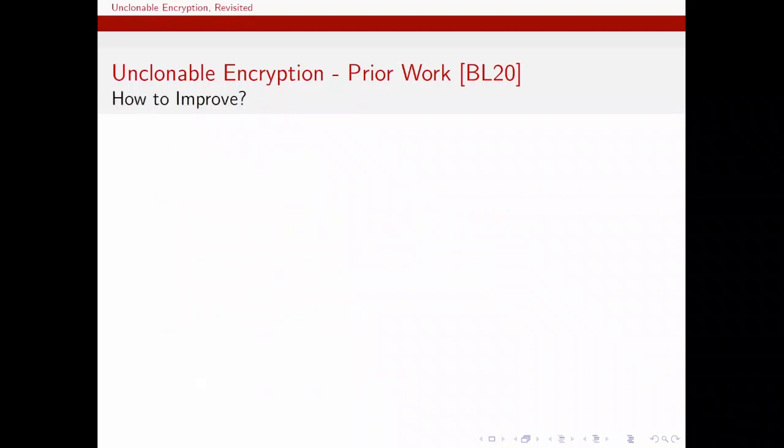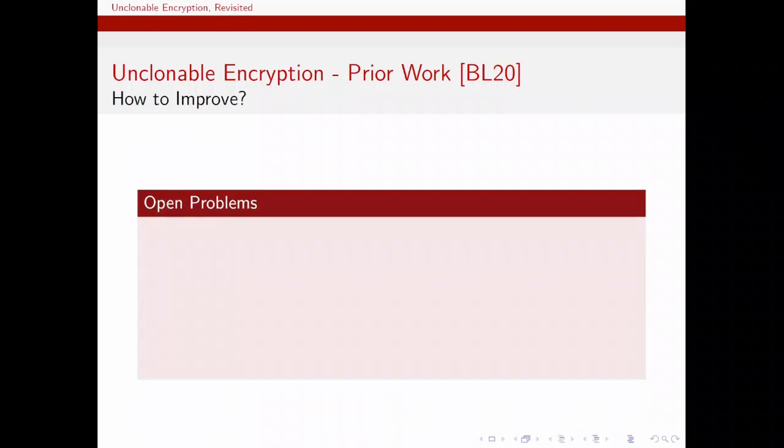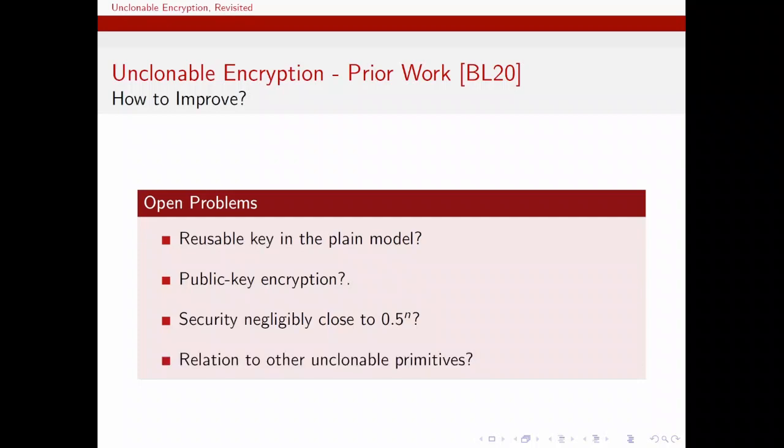In this work, we explore different ways to improve on this introductory work on unclonable encryption. Here are some of the open directions left by the authors to explore. Can we make the key reusable without resorting to the random oracle model? Can we make the encryption in the public key setting? Can we achieve security close to 0.5 to the n, which matches the trivial attack? And can we use this unclonable encryption primitive to construct other unclonable crypto or show implications in the other direction?